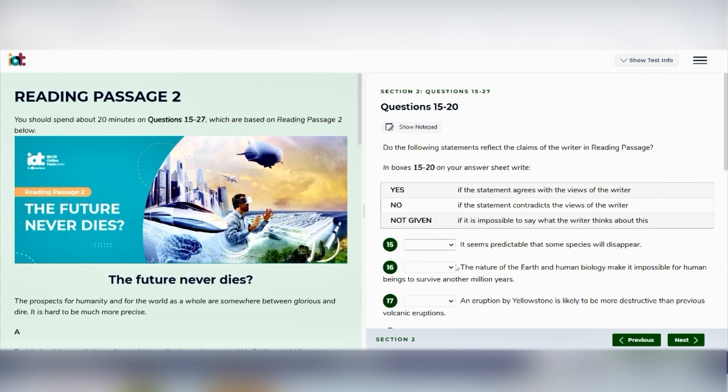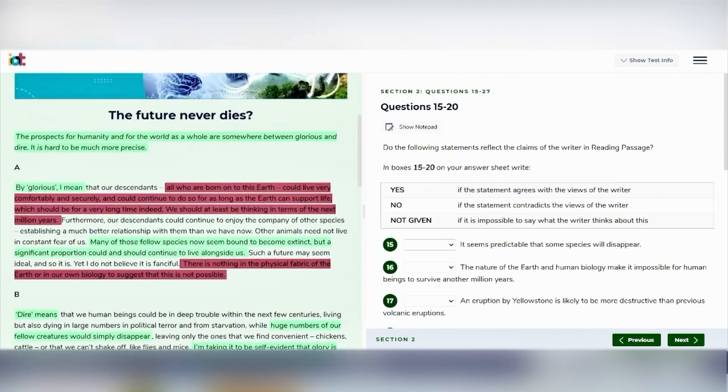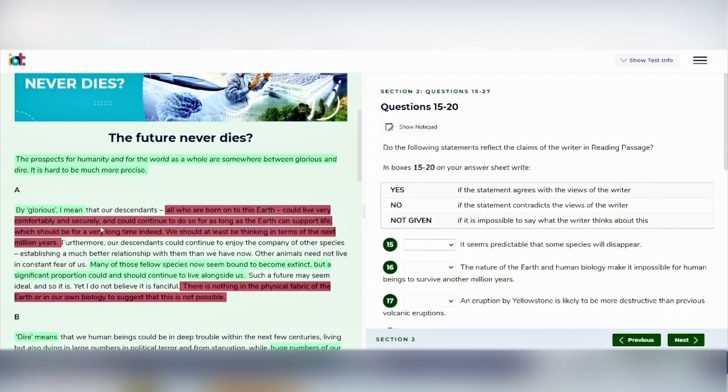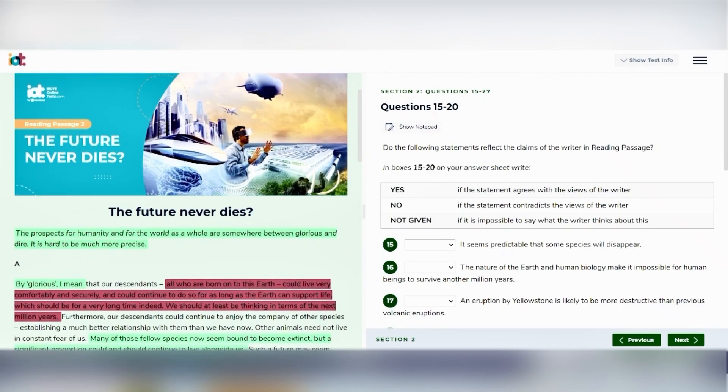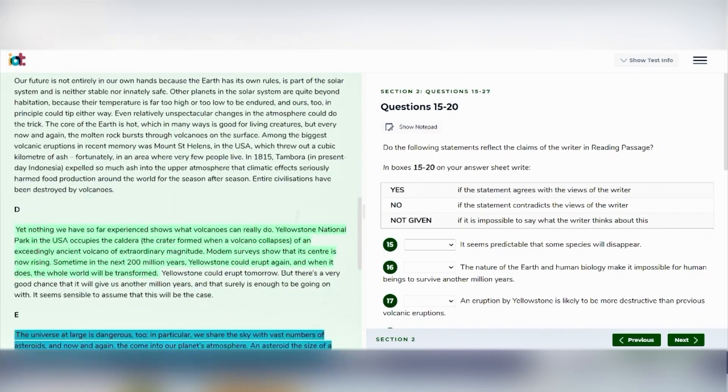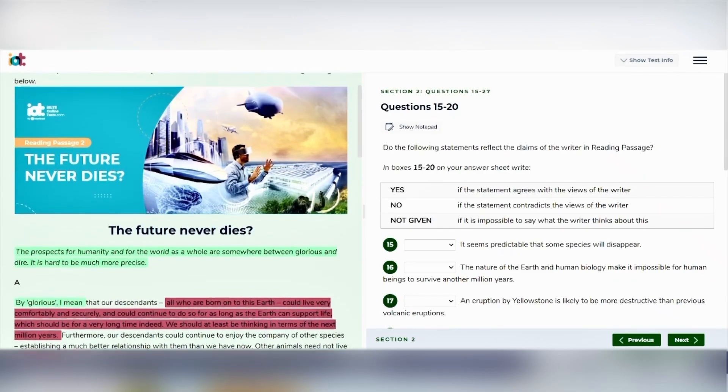So let's start answering the questions. This is the reading passage that I have selected. I have already read this passage and highlighted the relevant information. You can find the link for this passage in the description below. In this passage, I have highlighted the text which is relevant to yes answers with green color, for no answers with red color, and for not given answers with blue color.